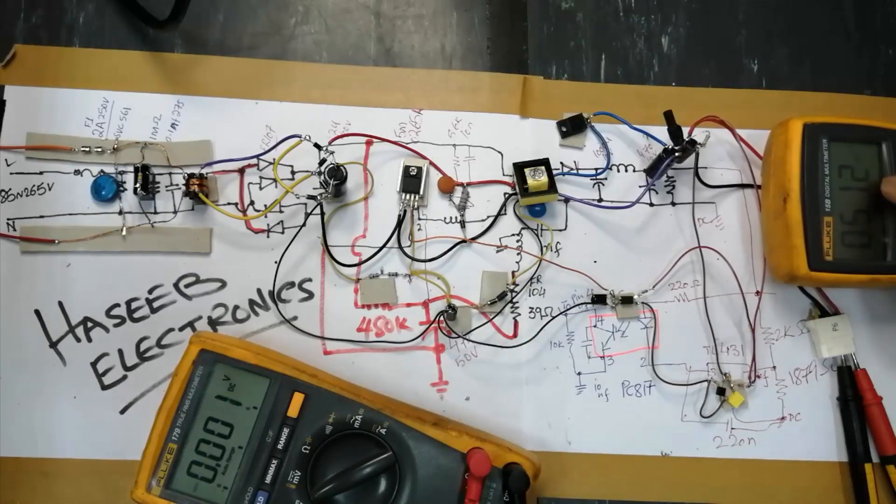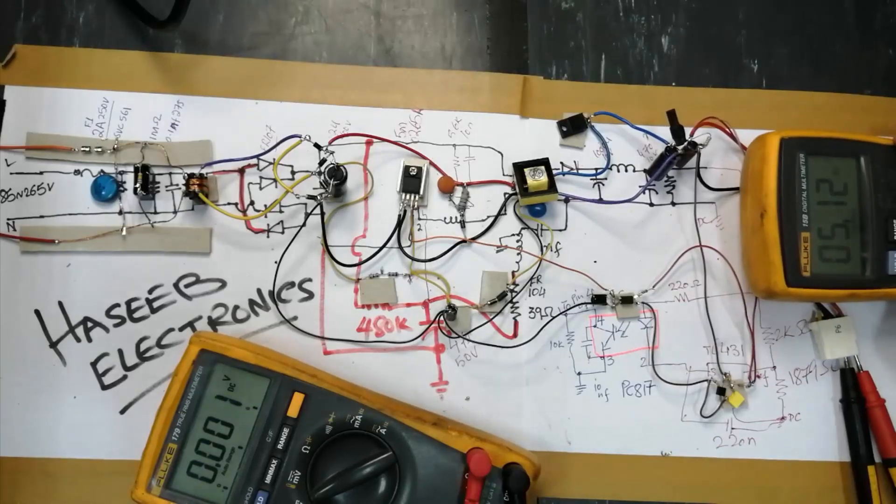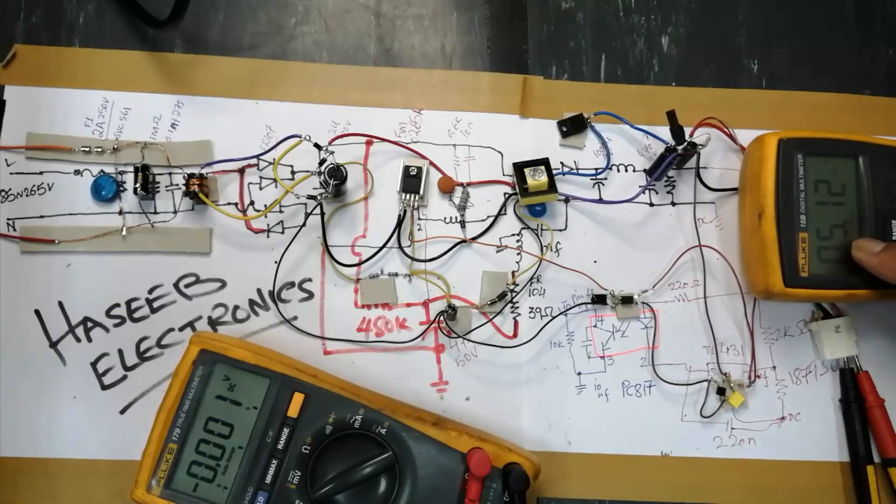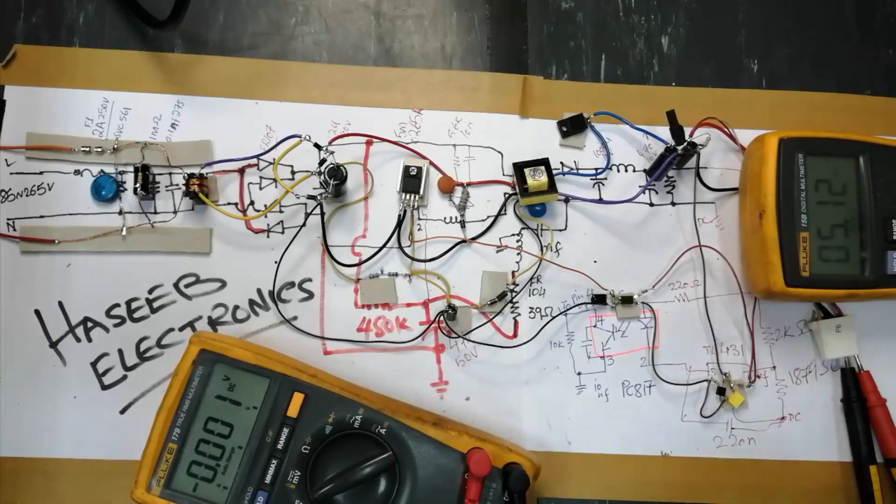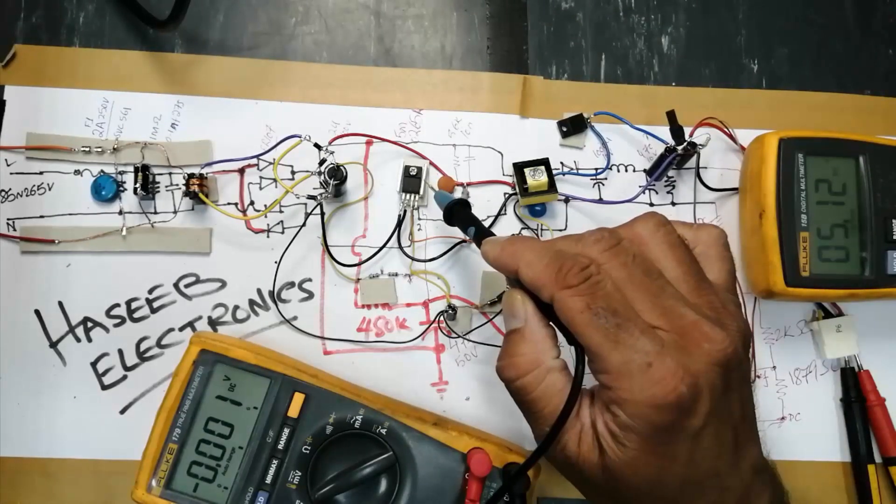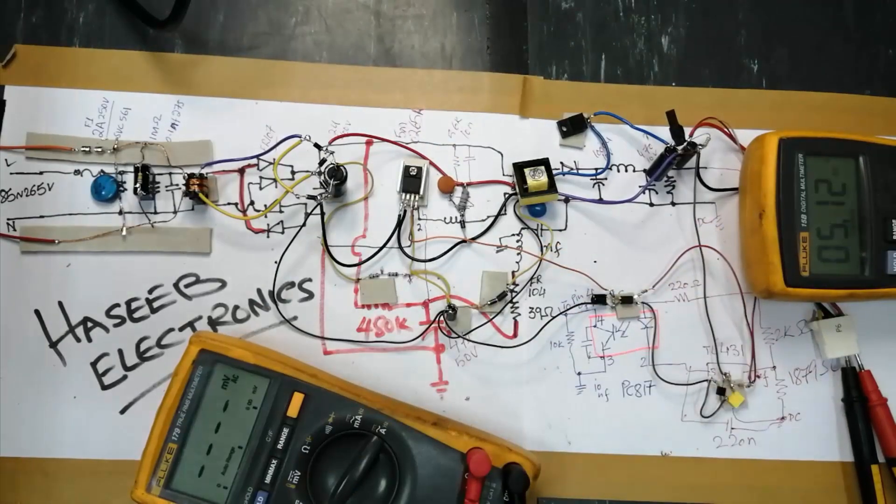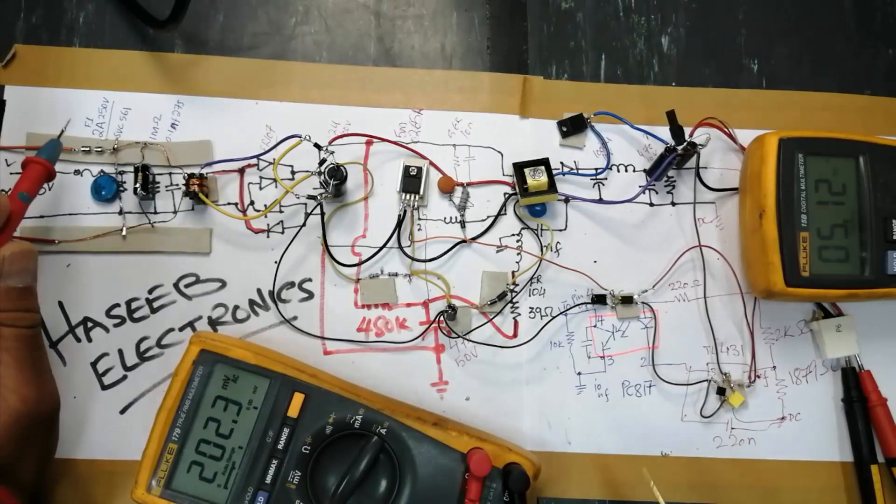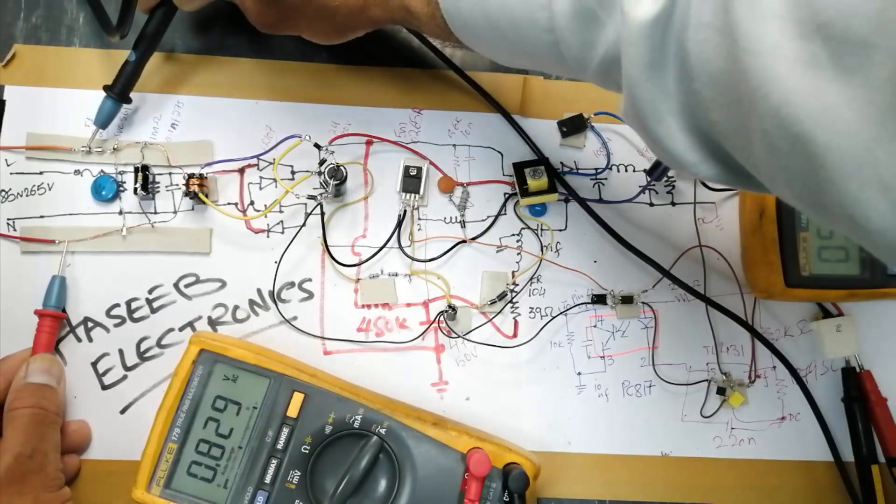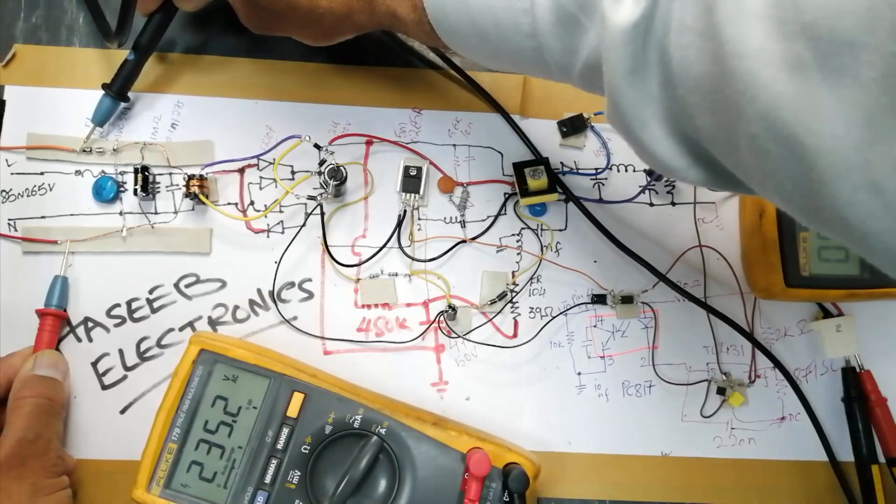If you want to increase the voltage, you can take current up to 4 ampere normally, but at that time we have to increase the heat sink size. Let's see the circuit. I connected AC voltage here, 235 volt.